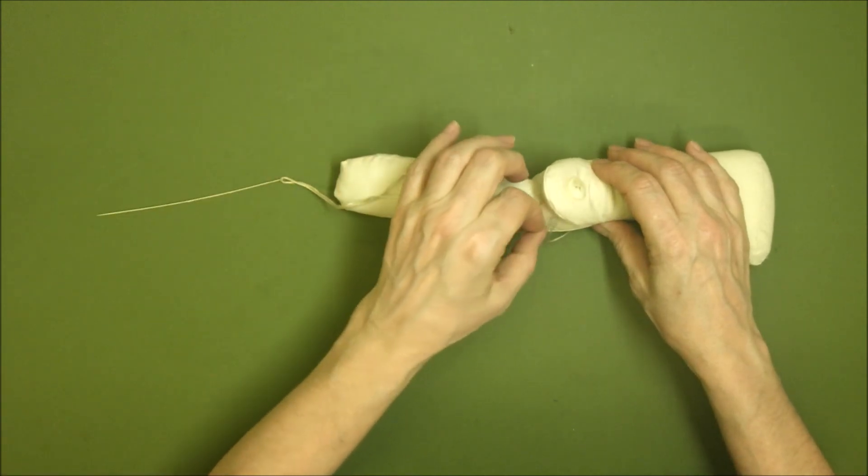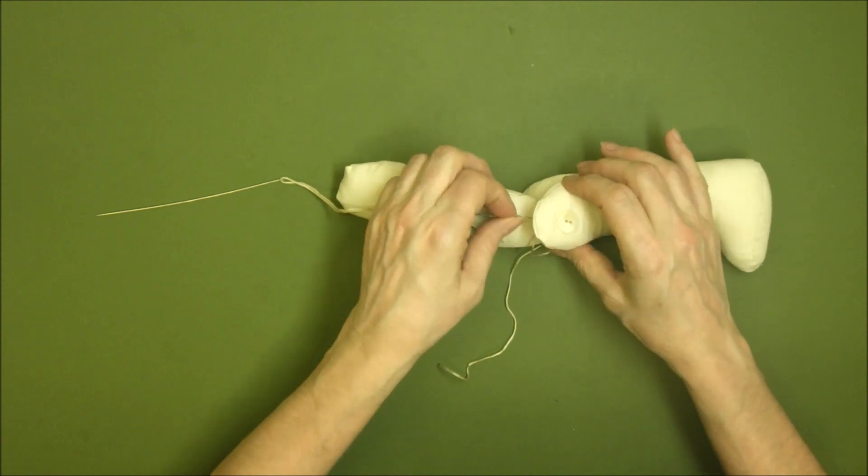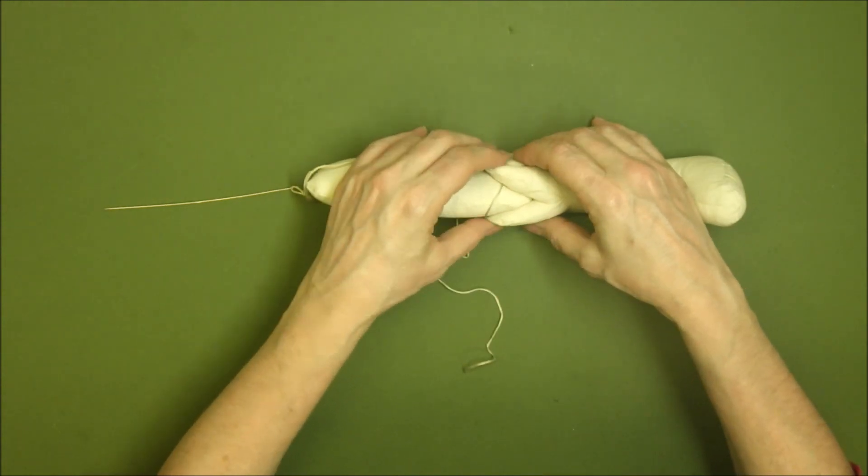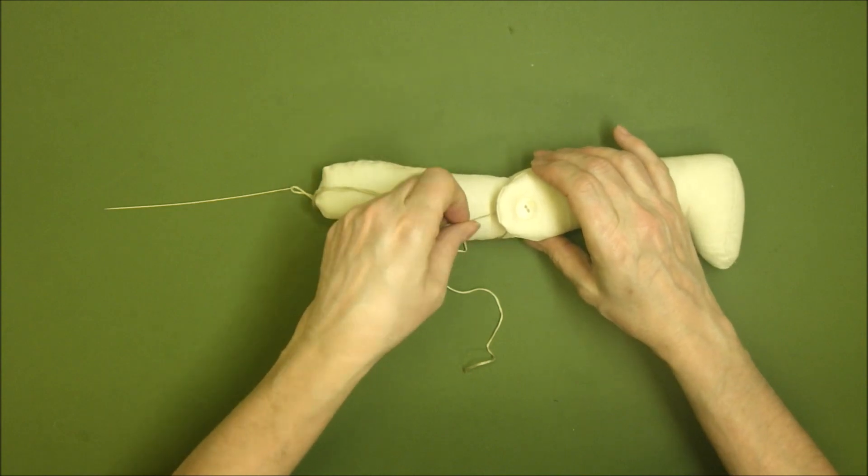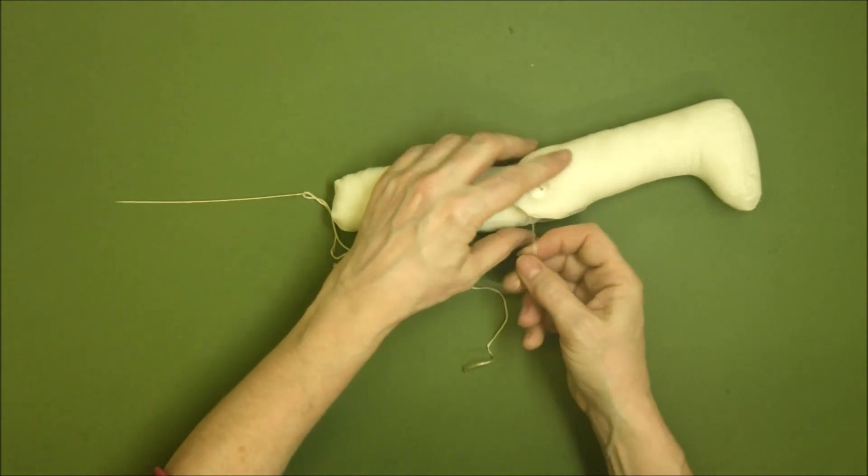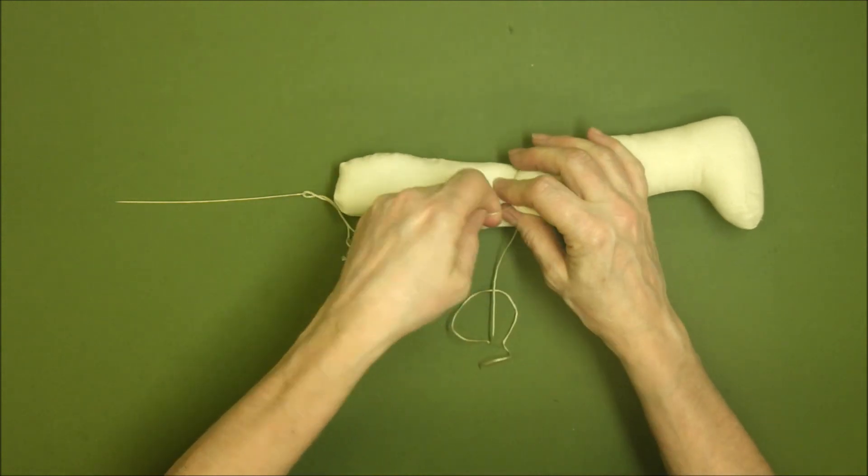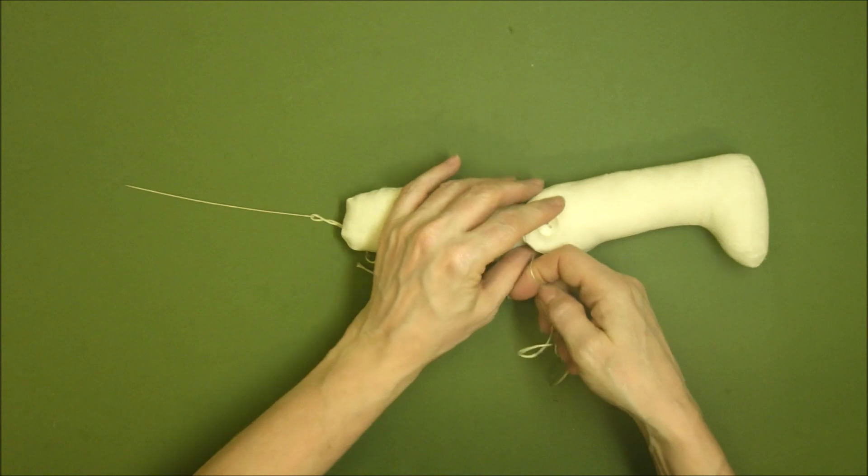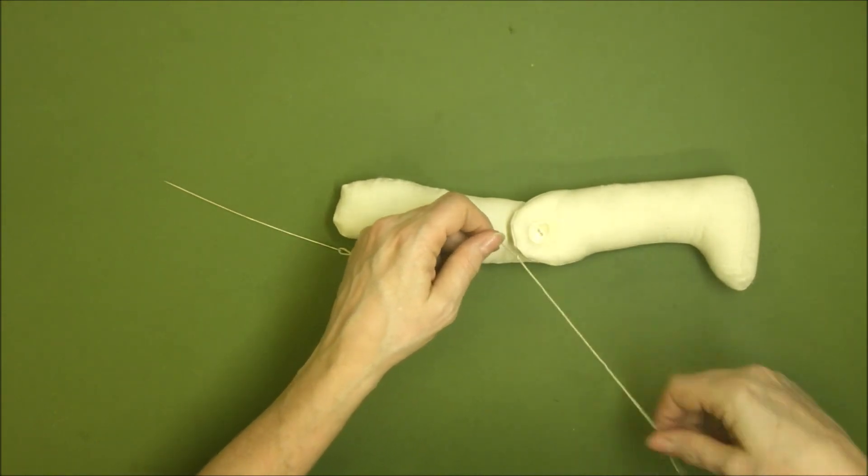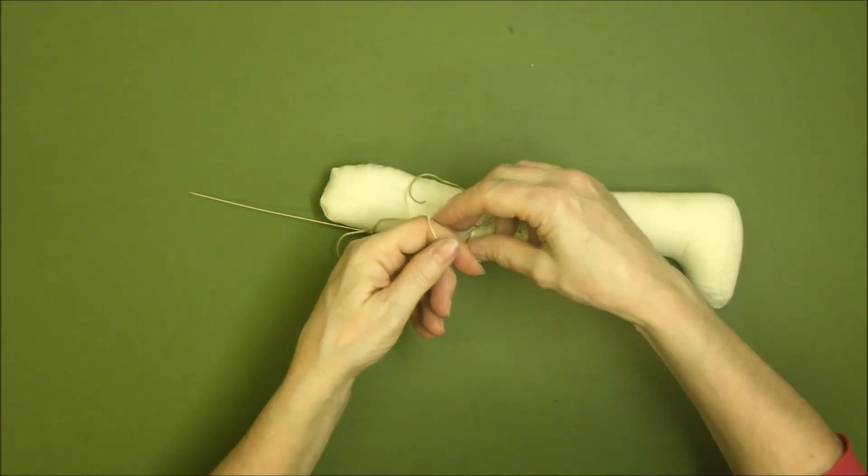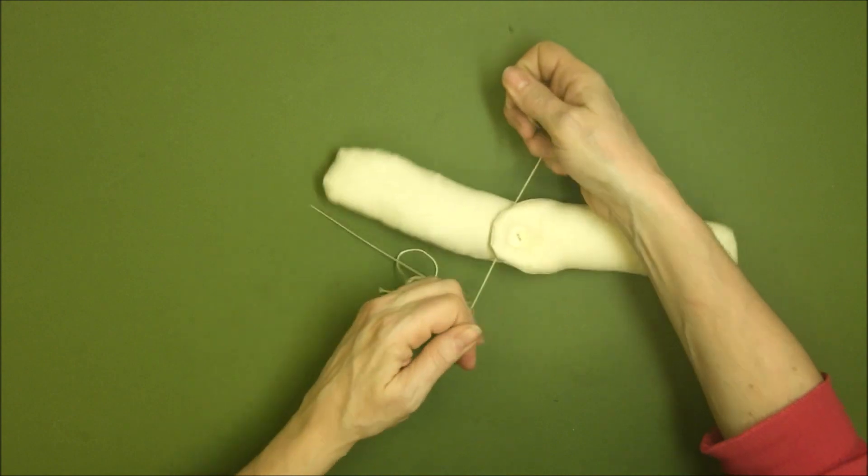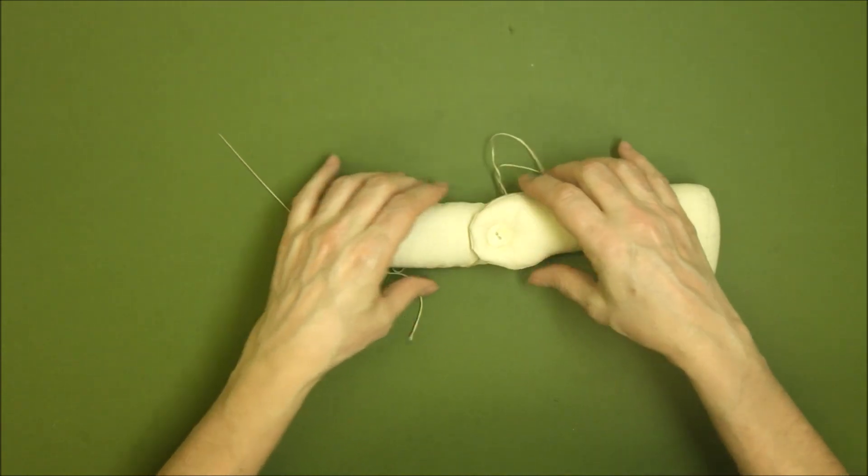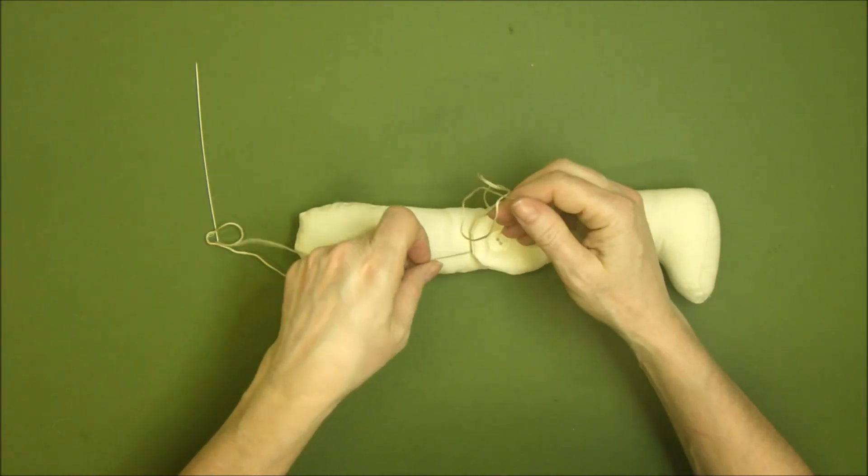Pull your threads nice and tight, and you should have a nice tight knee there. Give it a little tug, make sure there are no loops. Pull it nice and tight and then tie your knot. There you go, a little double knot and a nice little jointed knee. I'm actually going to tie a third just in case. Keep going - you can't have too many knots.